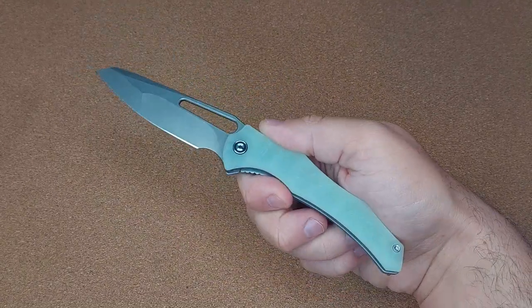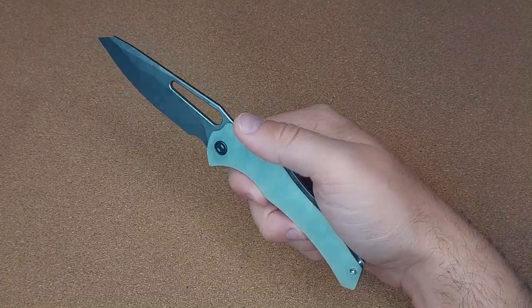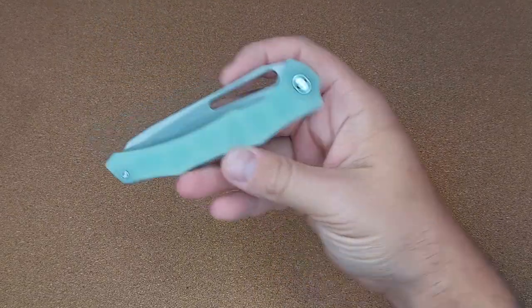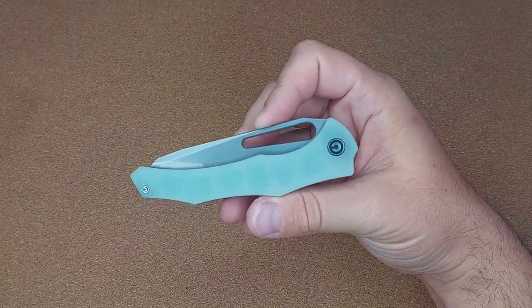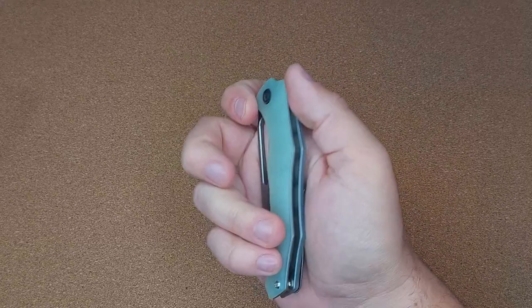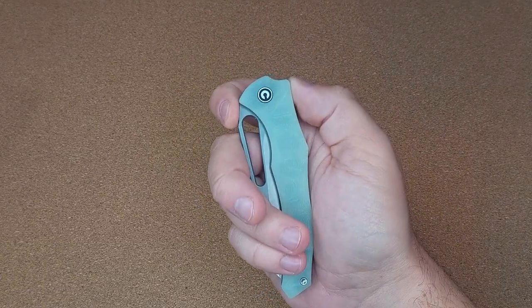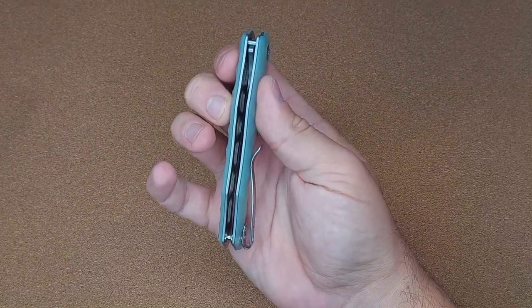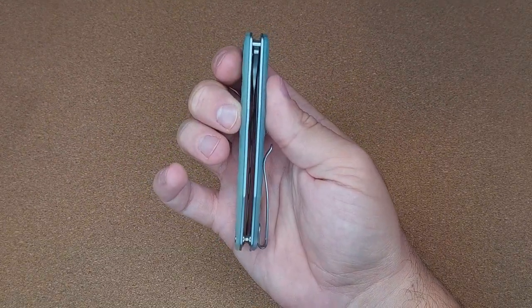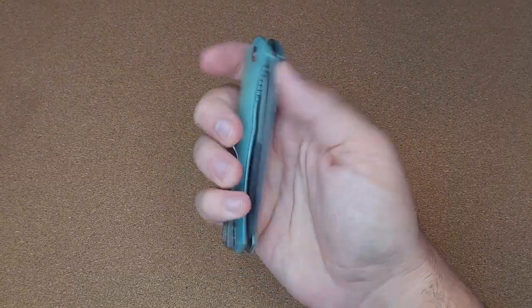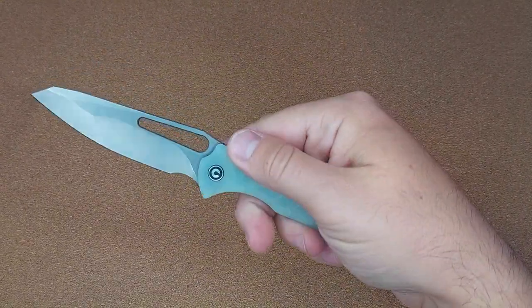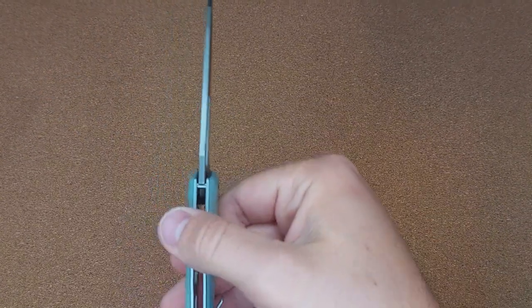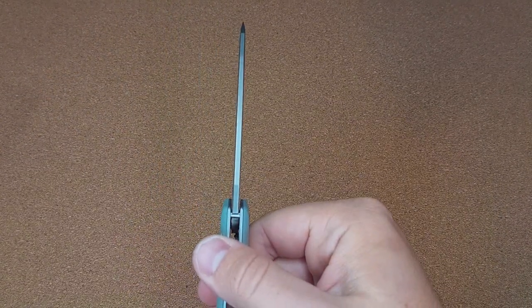The overall length of the knife is 7.81 inches long. The handle alone is 4.33 inches. It is 1.17 inches wide at widest and 0.51 inches thick. The blade is 3.47 inches long and 0.12 inches thick.